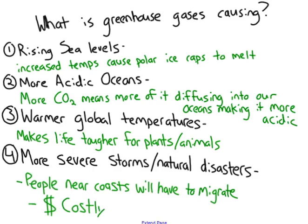Warmer global temperatures also cause problems for plants and animals. Too-hot temperatures are problematic for plants — they can actually die if they get too hot. The same is true for animals: increased temperatures increase stress and create harsher living conditions for both plants and animals. Finally, we are seeing more severe natural disasters and storms — more hurricanes and greater storm severity, because heat is displaced in wind and ocean currents, carrying more heat and causing harsher natural disasters.